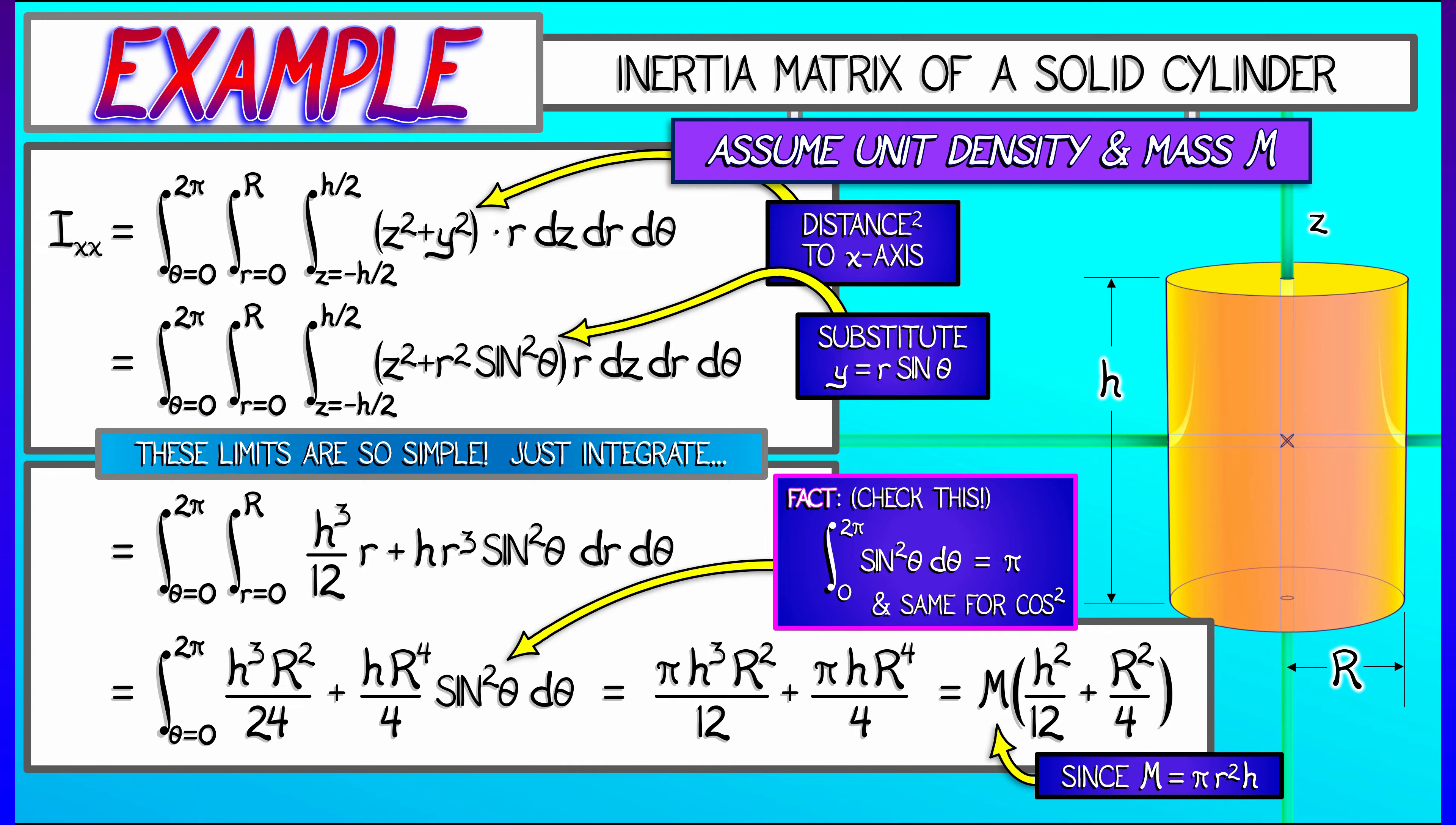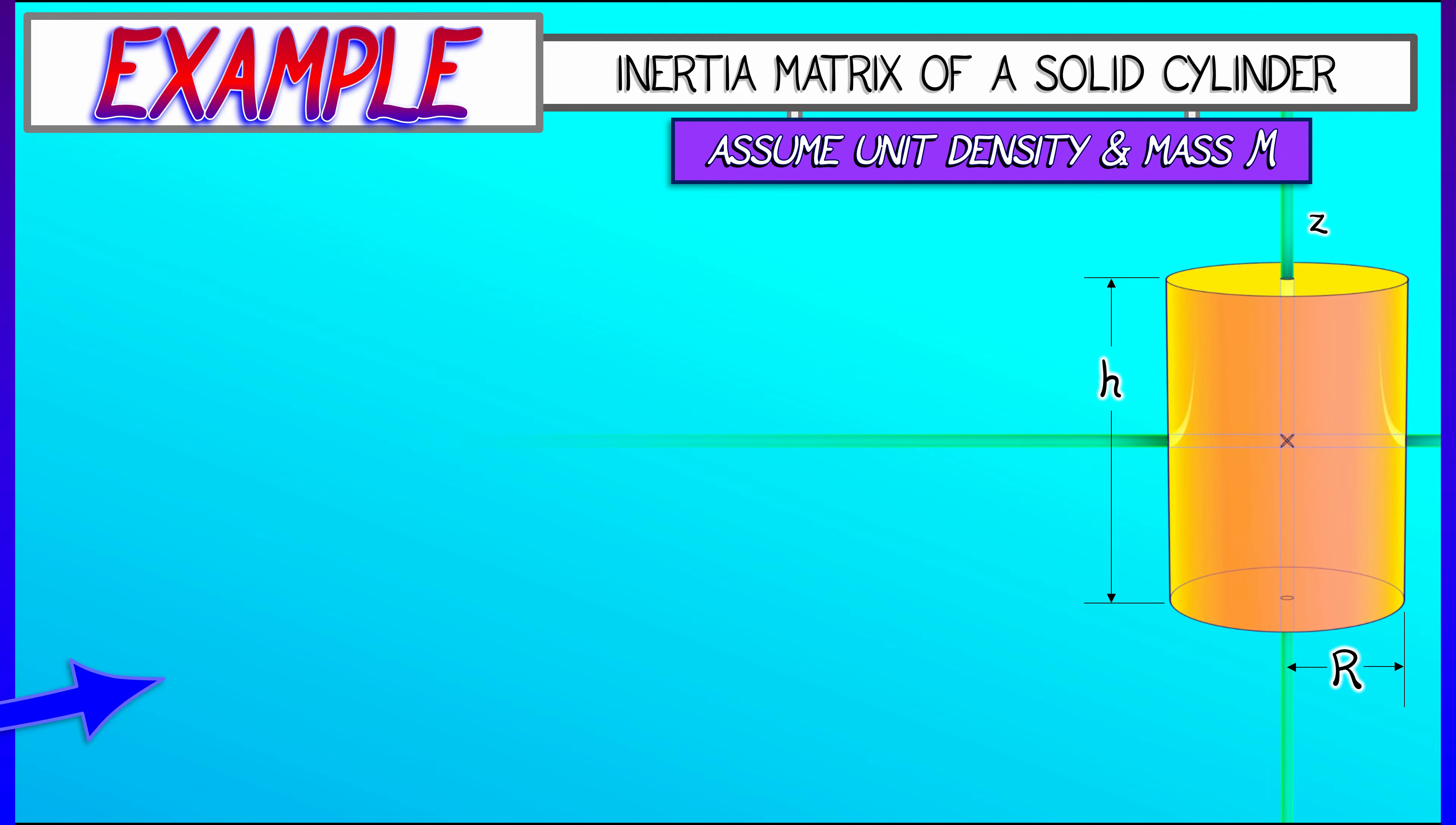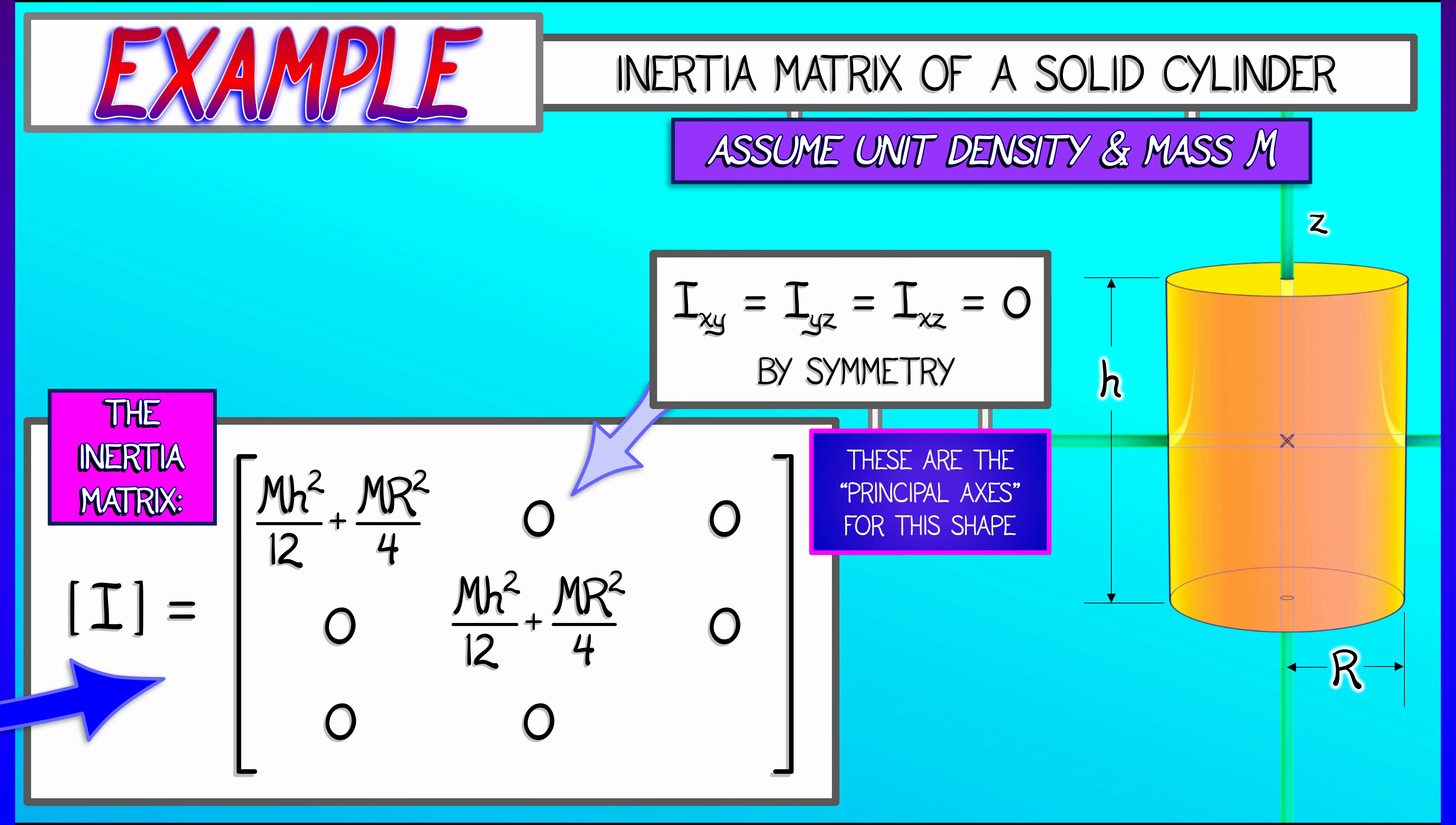By symmetry, the moment of inertia about the y-axis is exactly the same. So that saves us a bunch of work. If we fill in these two entries into the inertia matrix, we see that we have a lot more to go. But all of the off-diagonal entries are going to be equal to zero because of the symmetry of this object and the fact that we're using the principal axes in this case.